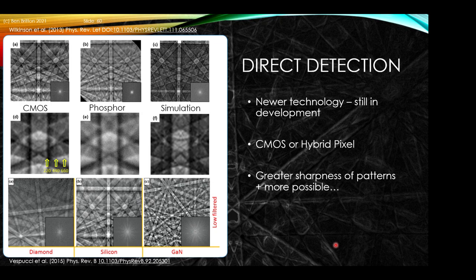There are also methods using direct electron detectors of different varieties. Some early work used CMOS-based detectors; more recent work uses Medipix-based detectors, which allow higher acuity as seen in Fourier transform analysis showing sharper features. Higher-order features visible in the CMOS pattern cannot be seen in the phosphor-based system, due to differences in the modulation transfer function. This is an emerging space and the landscape may change significantly in coming years.